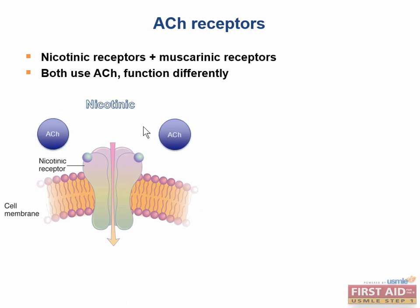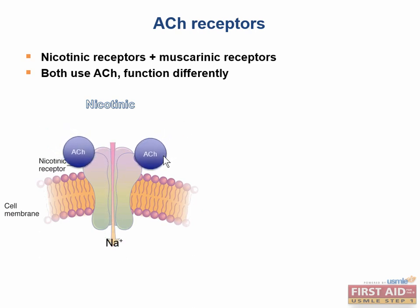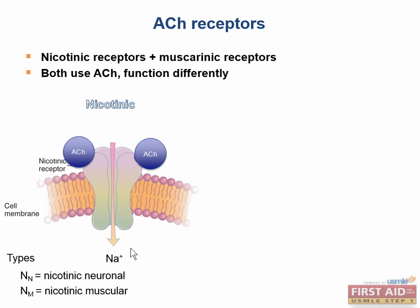We have acetylcholine that binds to our receptor outside the cell, causing the sodium-potassium channel to open, thus mediating the influx of sodium into the cell. Now there are two types of nicotinic receptors. There are N-sub-N receptors, which stands for nicotinic neuronal receptors, and these are found in the autonomic ganglia.